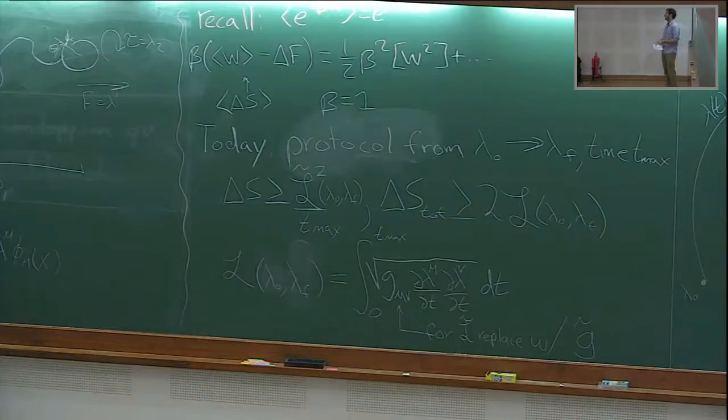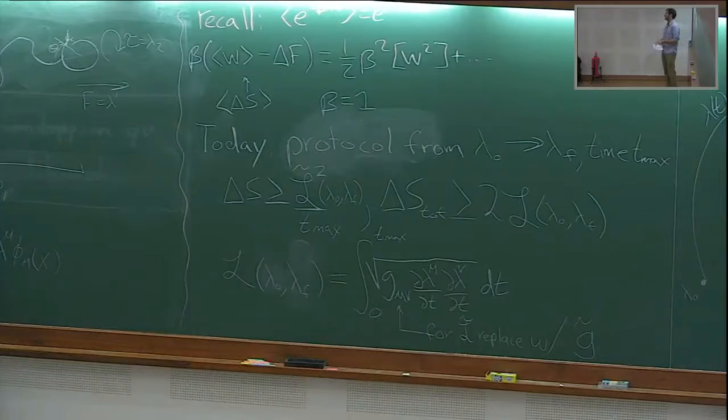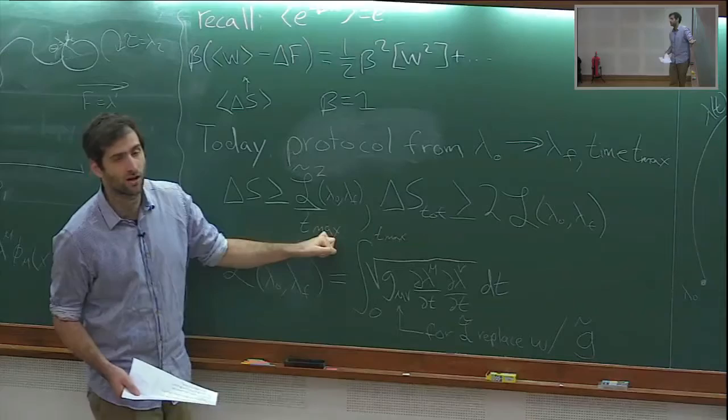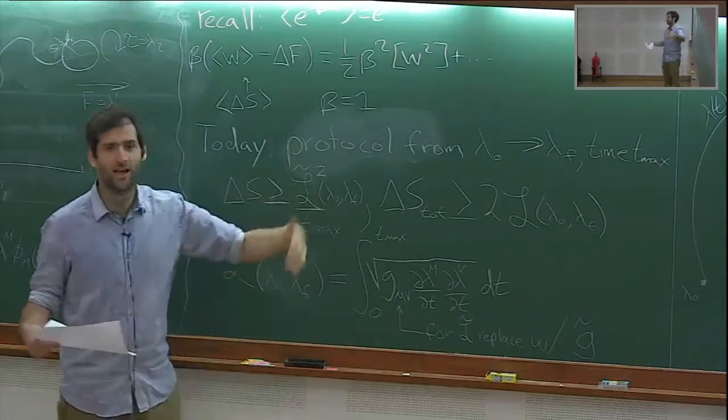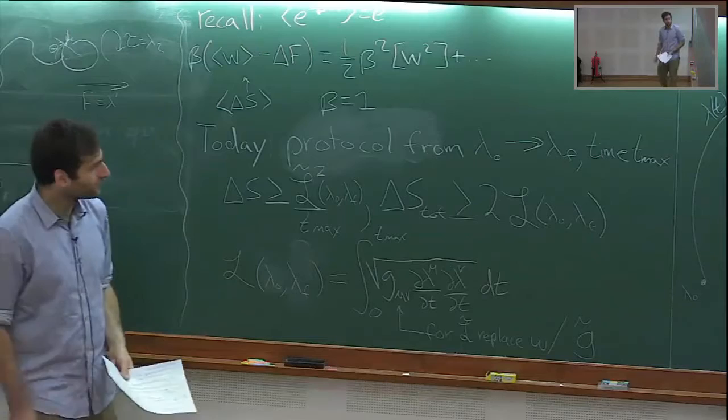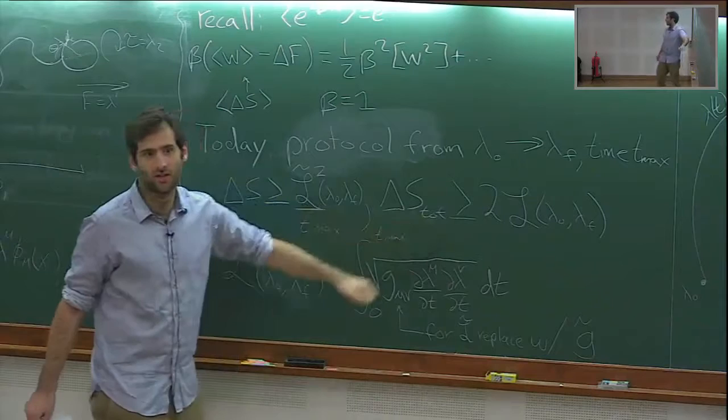This is L̃ squared divided by T_max. You can think about this as quantifying how far you are from the adiabatic or quasi-static limit. If I allow the protocol to be infinitely long, I can go slower and slower and eventually do this in a dissipationless way. Then I'm going to introduce the idea of δS_tot, the total entropy, which includes the energetic cost of controlling this.